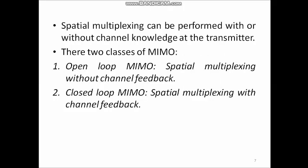Next, let us see the different types of spatial multiplexing methods. Similar to open loop and closed loop antenna diversity, in spatial multiplexing we can also perform multiplexing with or without channel knowledge at the transmitter. Depending on this, there are two classes of MIMO: open loop MIMO and closed loop MIMO. In open loop MIMO, spatial multiplexing does not require channel feedback — channel knowledge is not required at the transmitter. In closed loop MIMO, spatial multiplexing requires channel feedback — it is spatial multiplexing with channel feedback.